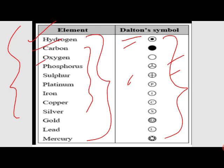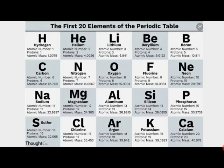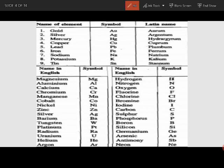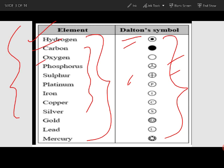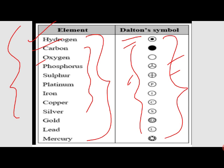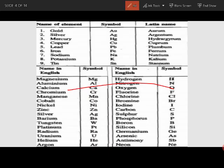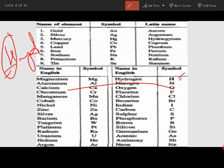As time passed, more and more elements were discovered. Those old pictorial symbols would not be helpful because it would be difficult to remember them. So in modern times, the technique applied was to take the symbol from the first letter of the element's name — for example, hydrogen becomes H.